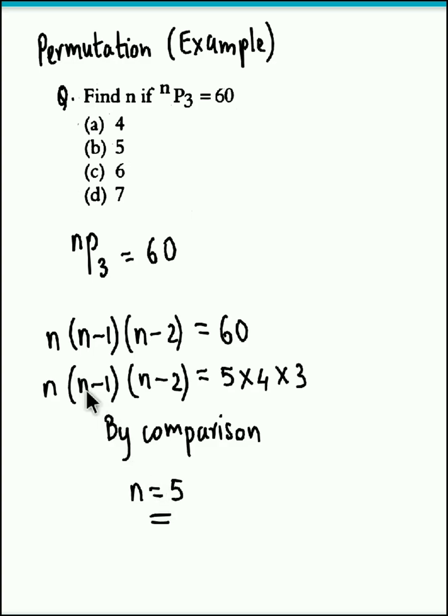Now even if you equate n minus 1 equal to 4, here again you will get n equal to 5. Or if we equate the third factors, that is n minus 2 equal to 3, again the result would be n equal to 5. So the final answer is n equal to 5 and the option is b.